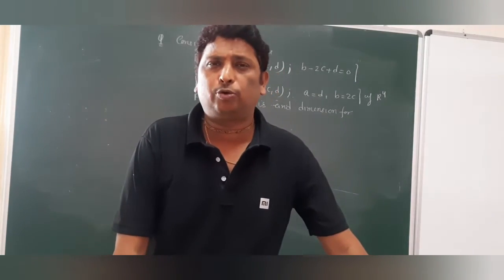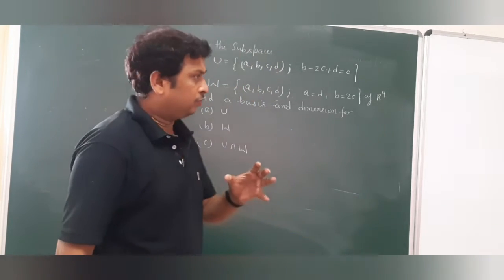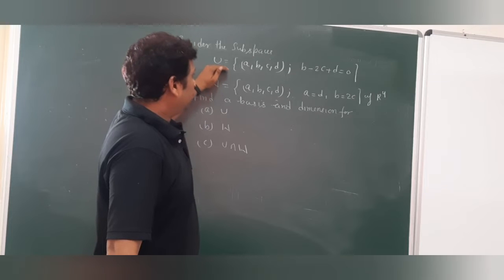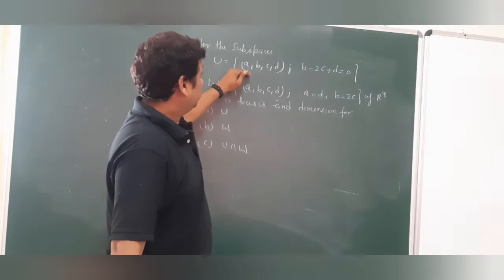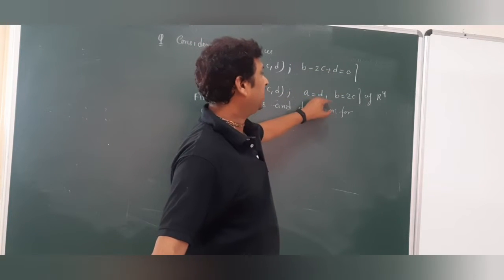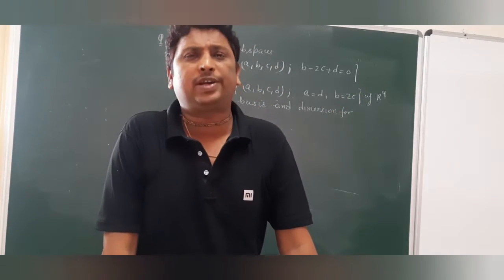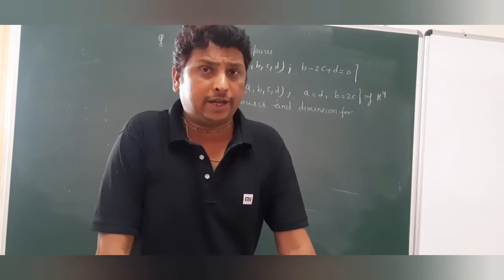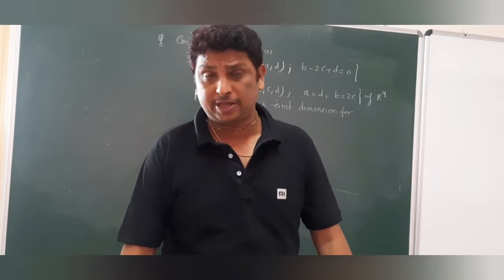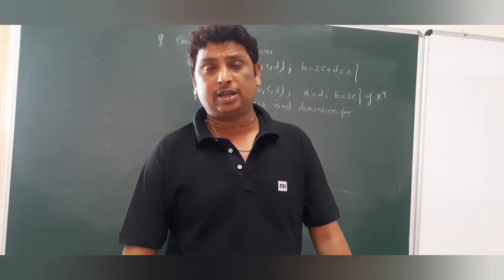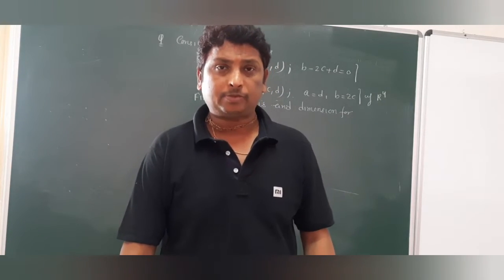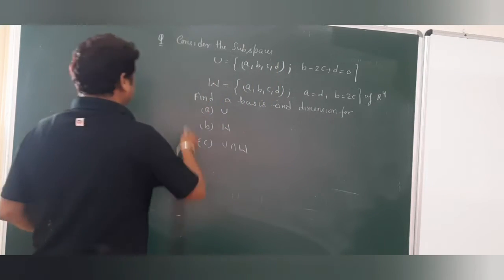Hello friends. In this lecture I will explain a very important topic. Consider subspaces U and W of R⁴, where U is defined by the condition b minus c plus d equals 0, and W is defined by a equals d and b equals c. I will explain how to calculate the basis and dimension for each, how to calculate the basis for their intersection, and what is a linear sum versus a direct sum.